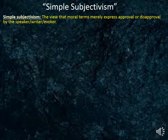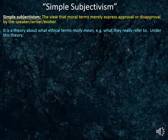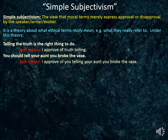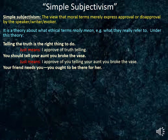Simple subjectivism is the view that moral terms merely express approval or disapproval by the speaker, writer, or evoker. It is a theory about what ethical terms really mean — what moral terms really refer to. So under this theory, 'telling the truth is the right thing to do' really just means 'I approve of truth-telling.' Or, 'you should tell your aunt that you broke the vase' really just means 'I approve of you telling your aunt that you broke the vase.' And 'your friend needs you, you ought to be there for her' really just refers to your own personal approval or disapproval — it just means 'I approve of you comforting your friend.'